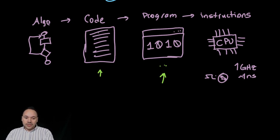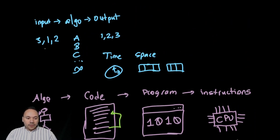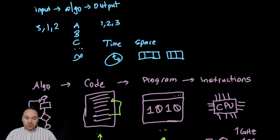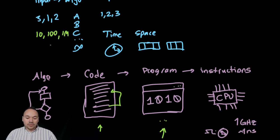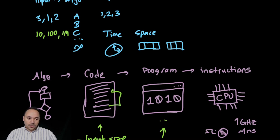We compute how many computations each statement will perform, and then make a function in terms of the input size n. The input size matters because if we have three numbers, the computation differs from having 10, 100, or a million. Also, the same three elements in sorted order versus inverse order can make a significant difference for certain algorithms.